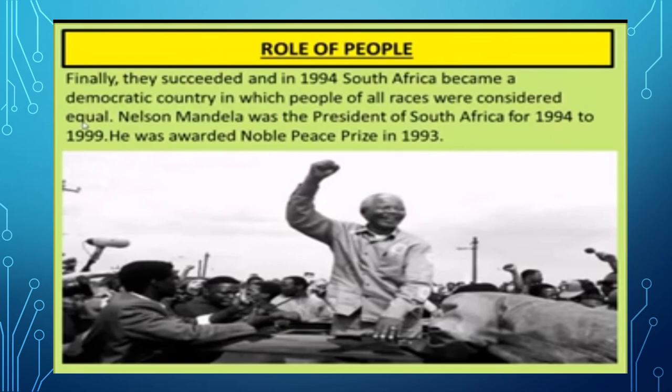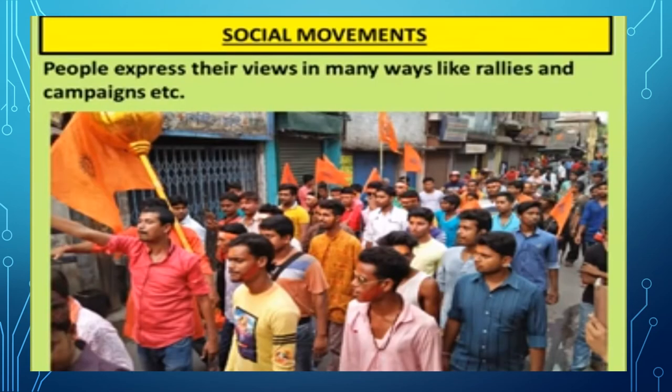Participation happens in the following ways. The right to vote is of utmost importance in a representative democracy. All adults of a country should have the right to vote in elections and select their representatives. They also have the right to re-elect the same representative or elect another if they are not satisfied with their previous choice. People also have the right to express their views freely if they are not comfortable with any decision taken by the government.